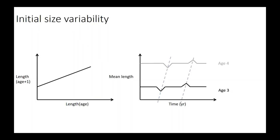You can contrast that with a model in which mostly early life history effects drive changes in size—we call this initial size variability. At recruitment or a young age, the fish either had good or bad nursery conditions, starting off either smaller or larger on average. These effects are expected to persist throughout its life: fish that start off small would always be small as they age, whereas fish that start off big continue to be big.